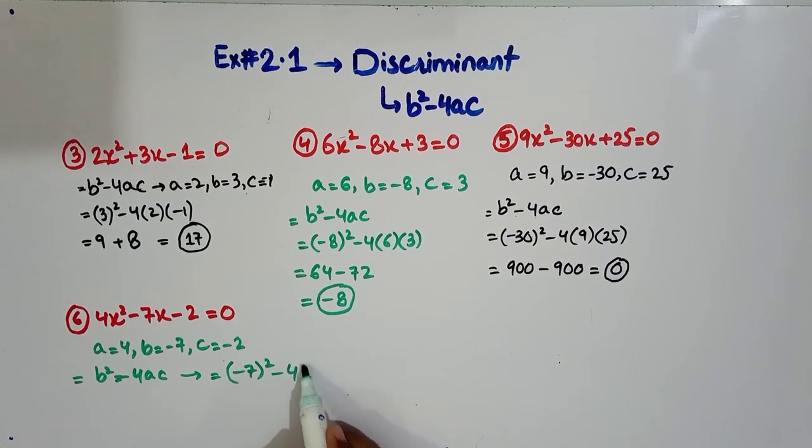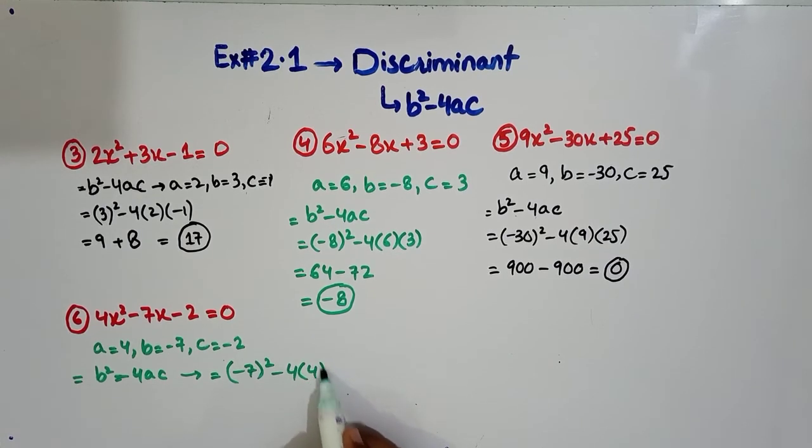Minus 4 into a to 4 and c to minus 2, plus 32. Now 7 square you have 49, and 4 we will multiply this with 4 and then minus 2 plus 32, and we will add them and we have the answer is 81.